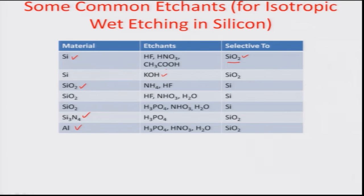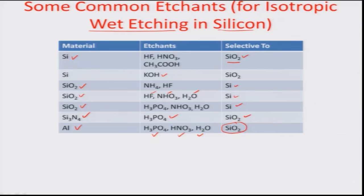SiO2 has several etchants — for example, NH4F and HF together, or HF, HNO3, H2O — these etchants are designed for SiO2 but stop when they face the silicon layer. For silicon nitride, phosphoric acid is used as the etchant and the etch stop is oxide. For aluminum, a combination of phosphoric acid, nitric acid, and H2O is used, and SiO2 again serves as the etch stop.